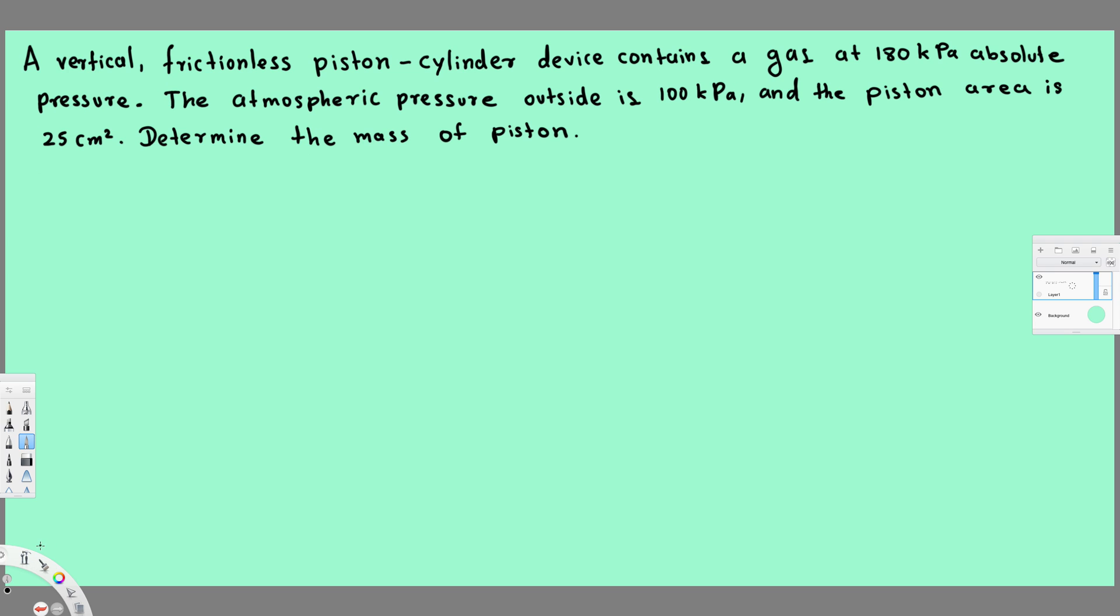Hey, what's going on guys? Let's do this problem right here. The question is asking: a vertical frictionless piston-cylinder device contains a gas at 180 kilopascal absolute pressure. The atmospheric pressure outside is 100 kilopascal, and the piston area is 25 centimeter square. Determine the mass of piston.